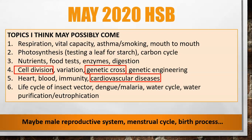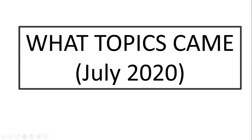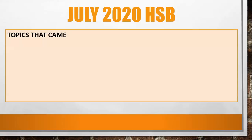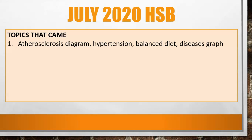It's interesting to look at the actual topics that came, so let's take a look at the July 2020 paper. The first question was on an atherosclerosis diagram, hypertension, balanced diet, and a graph on diseases. Remember, the first question on the paper is usually going to have some kind of chart, graph, or table — something to interpret. So just keep that in mind.